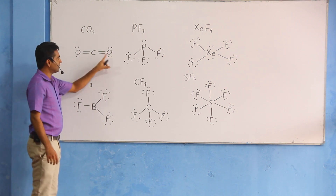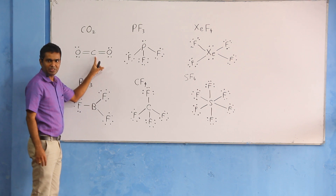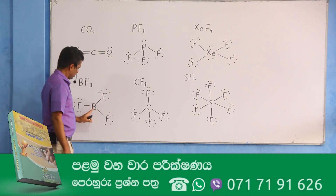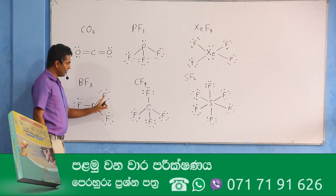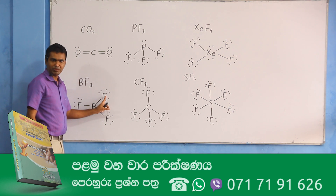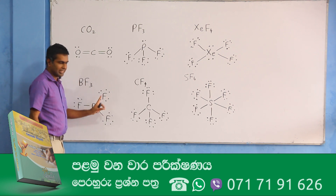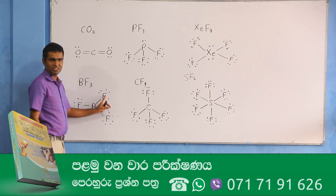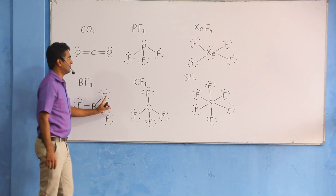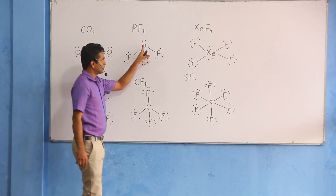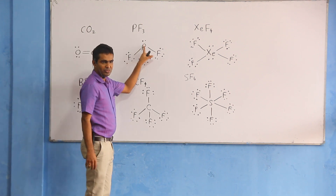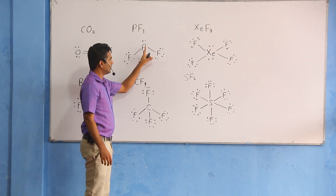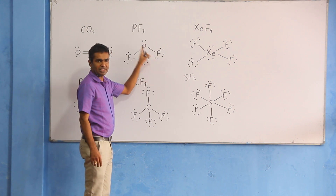We form carbon dioxide hydrogen carbon dioxide. We form carbon carbon carbon dioxide. This is a phosphorus carbon dioxide hydrogen carbon dioxide — this is a phosphorus fluorine bond.